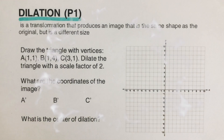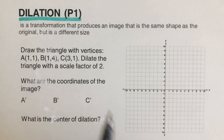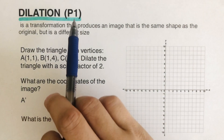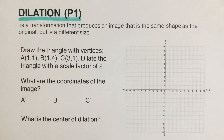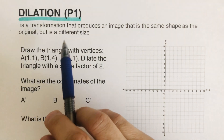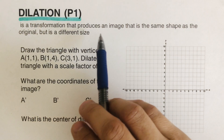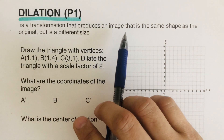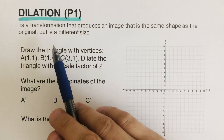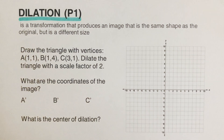Hello everyone, today we're going to cover dilation. This is the first part — I will put the link to the second part in the description box below. Dilation is a transformation that produces an image that is the same shape as the original but a different size. The image and the pre-image are similar figures.